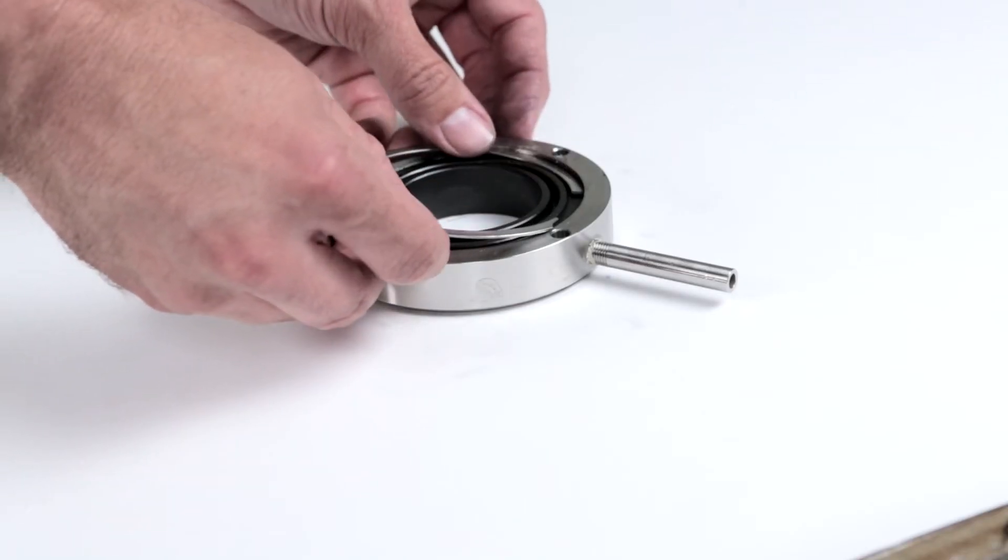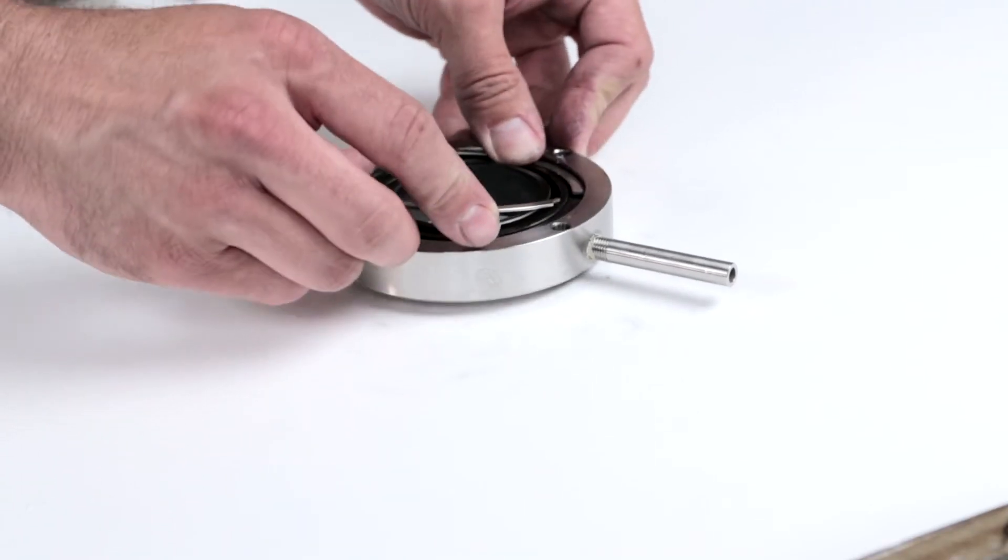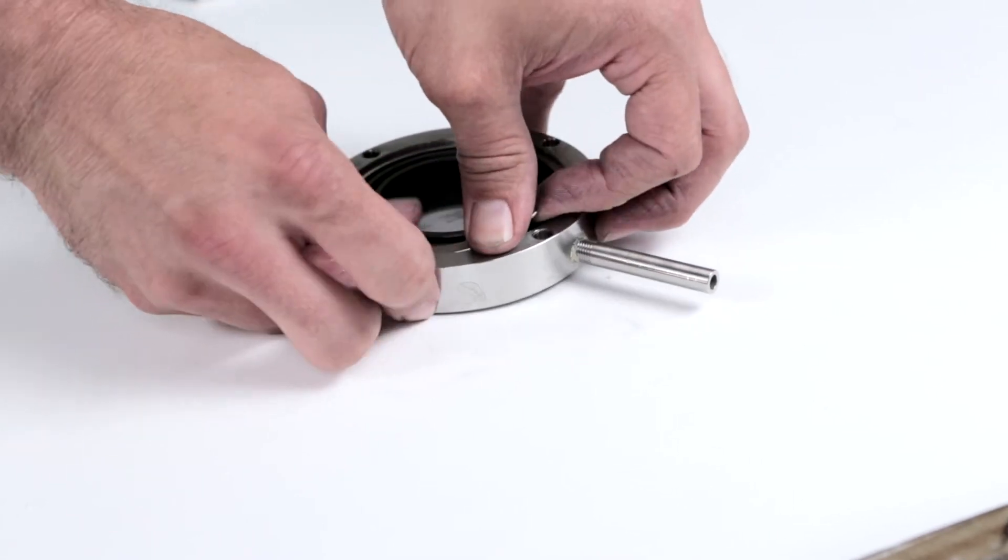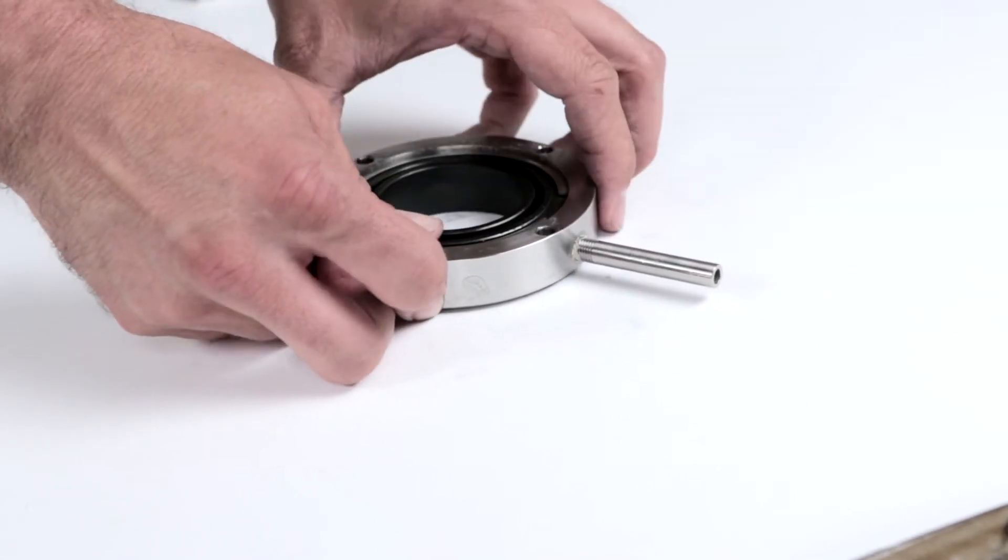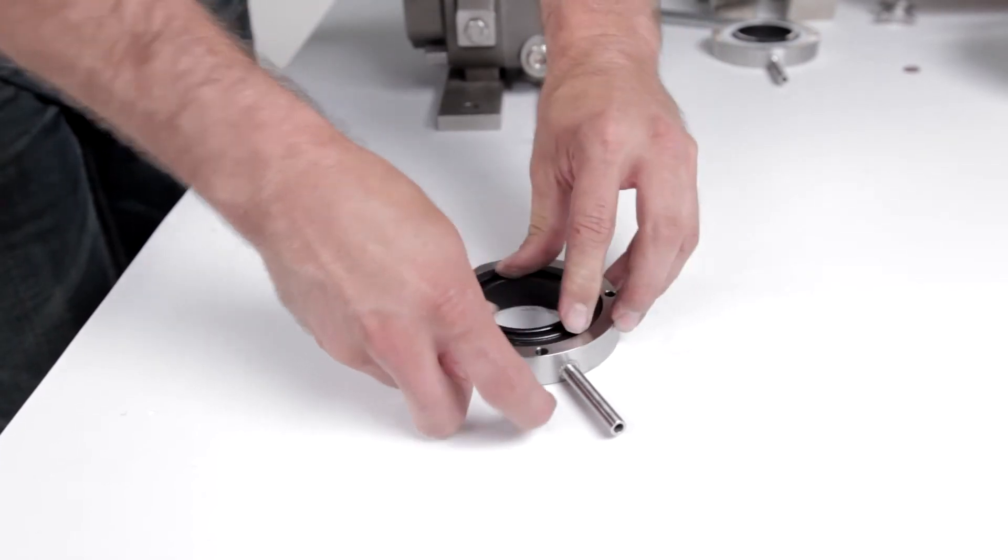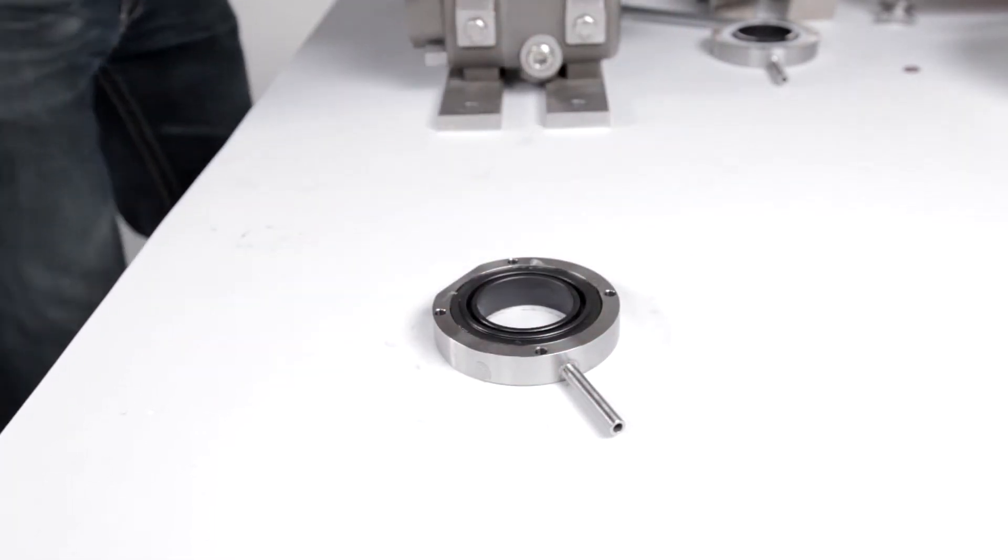Set the seal retaining ring on top of the seal housing. Push down on the flush seal until it is past the seal retaining ring groove. Use your fingers to fit the seal retaining ring into place.